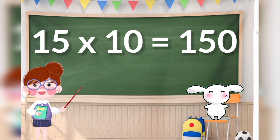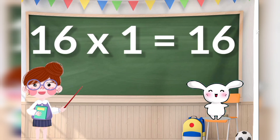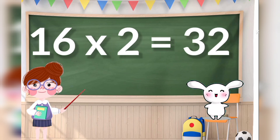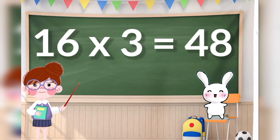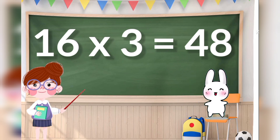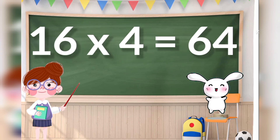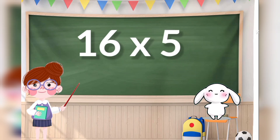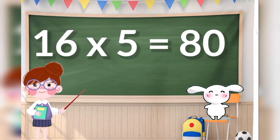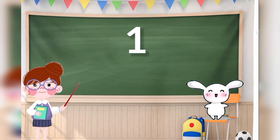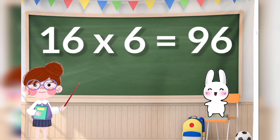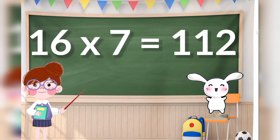16 ones are 16, 16 twos are 32, 16 threes are 48, 16 fours are 64, 16 fives are 80, 16 sixes are 96, 16 sevens are 112.